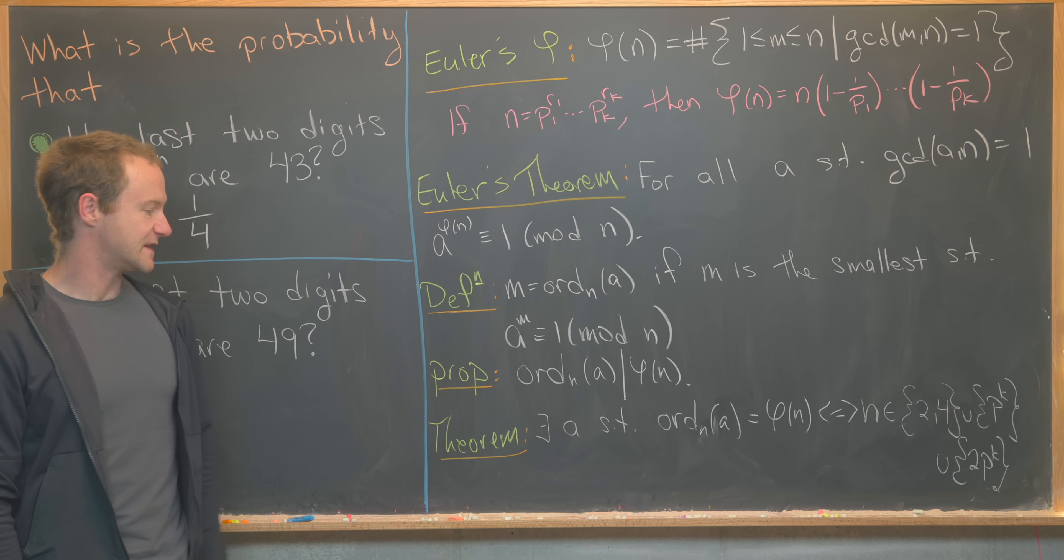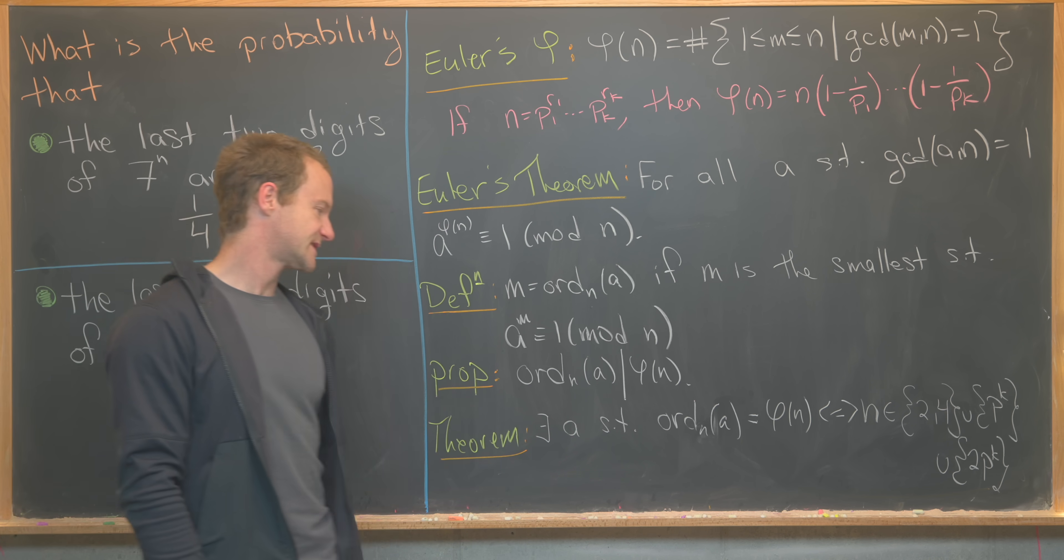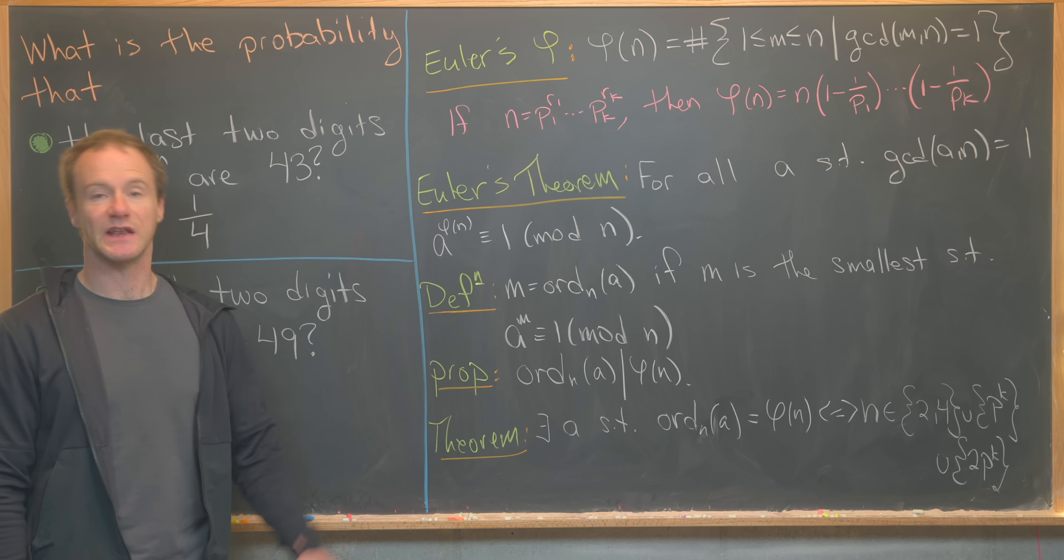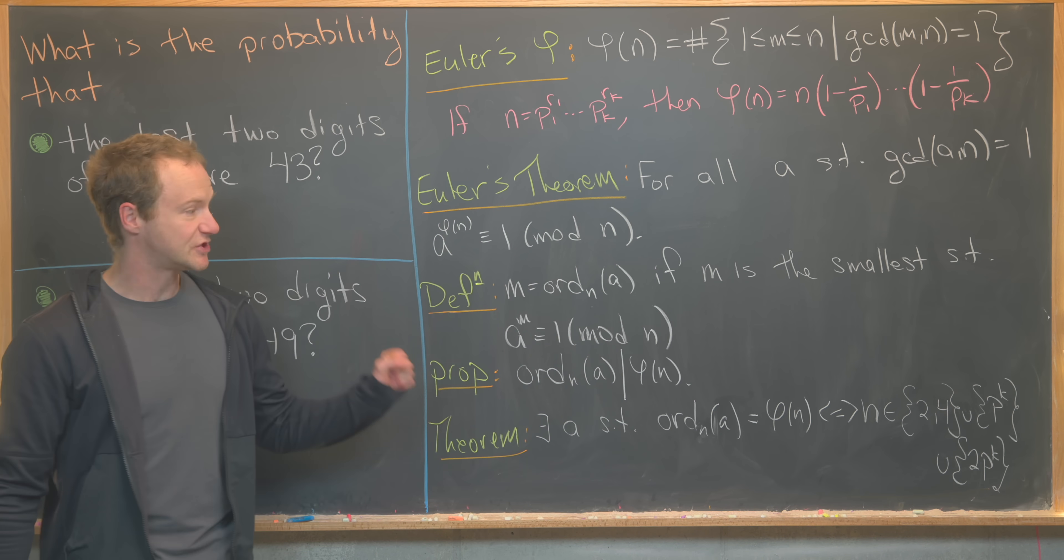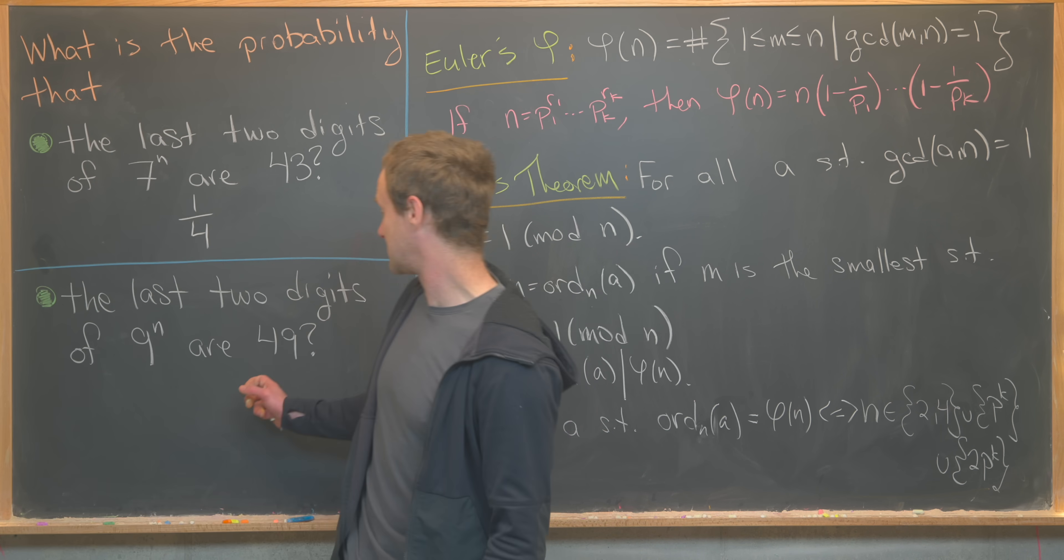And then we've got this final theorem, which has to do with the notion of primitive roots modulo n. And that is there exists some number a where the order of a modulo n equals phi of n, in other words it achieves that highest possible order, if and only if n is a special form. So it can be 2, 4, it can be p to the k where p is a prime, or it can be 2 times p to the k where p is a prime. So now that we've got these ideas under our belt, let's look at this second question.